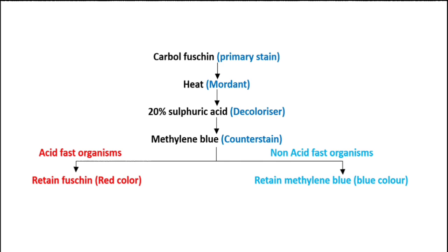Now what is the procedure for acid fast staining? There are only three things: the first is carbol fuchsin, the second is 20% sulfuric acid, and the third is methylene blue. First we will add the primary stain, that is carbol fuchsin. 1% carbol fuchsin is added and it will be left for 5 minutes.